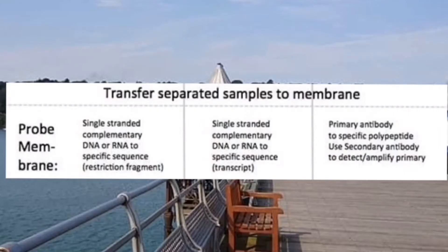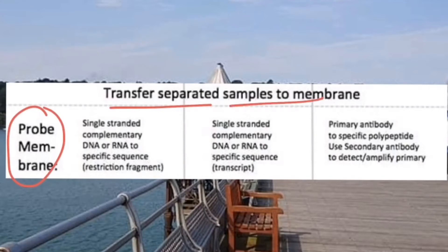Now we understand the basic principles behind these molecular techniques — how you can find specific macromolecules like DNA, RNA, and proteins. These are probe-based methods involving transfer of separated samples onto membrane systems, using single-stranded complementary DNA or RNA probes. For DNA identification, you perform restriction digestion and then run Southern blotting using an agarose-based gel method.